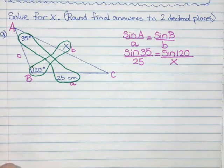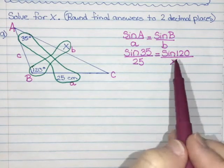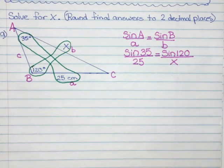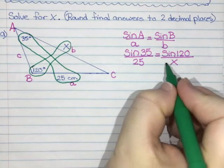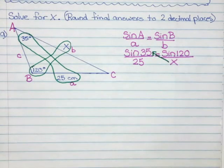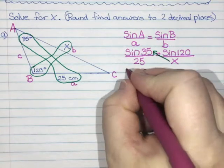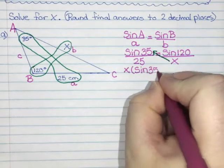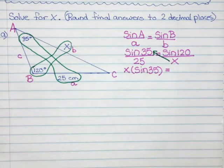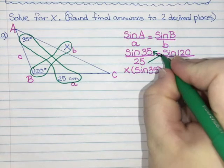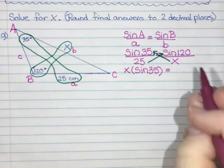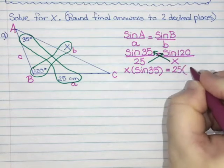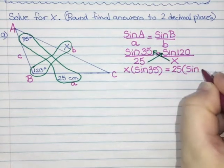From here I don't want to have fractions. What we learned when working with sine cosine tan ratios is cross multiply. So that's what I'm going to do here. I'll multiply x by sine of 35, so x times sine of 35 equals, and I'll multiply the other side by 25, so 25 times sine 120.